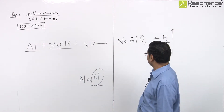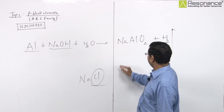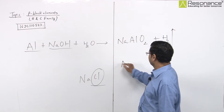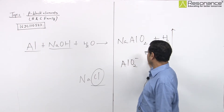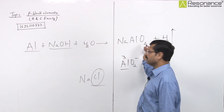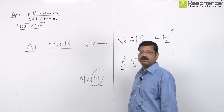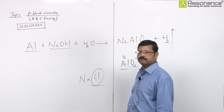Aur wo iske yaha pe AlO₂⁻ (aluminate ion) — us mein bhi clear hai ki yeh anionic wale hamare yaha pe part mein hai.